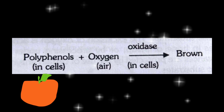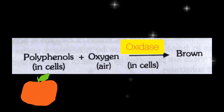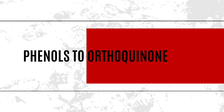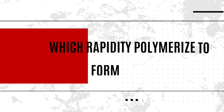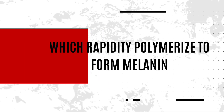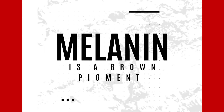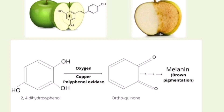Here you can see that we have polyphenols in the cell and oxygen in the air. The oxidase enzyme converts these into brown color. The enzymatic browning is due to the oxidation of phenols to ortho-quinone, which is in turn rapidly polymerized to form melanin. Melanin is a brown pigment.